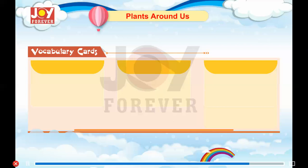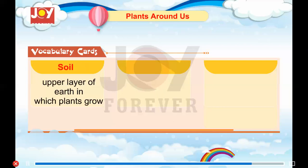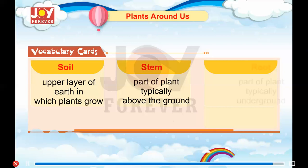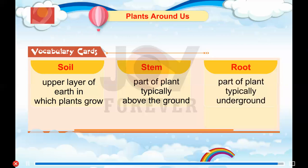Vocabulary cards: Soil — upper layer of earth in which plants grow. Stem — part of plant typically above the ground. Root — part of plant typically underground.